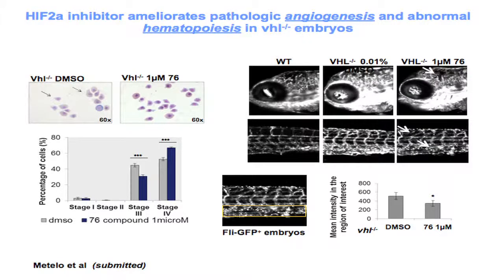We can deconvolute this effect into a contribution from blood vessels versus red cells by crossing this fish with another fish that has been genetically engineered to have green vessels. The VHL-negative fish now shows marked vessels and develops angiogenic lesions in the brain, in the retina, and in the body — very intense vascular proliferation seen with loss of VHL in tumors or in angiogenic lesions in VHL patients. When we treat with the drug, we reduce the intensity of vascular proliferation and the size of the tumors.